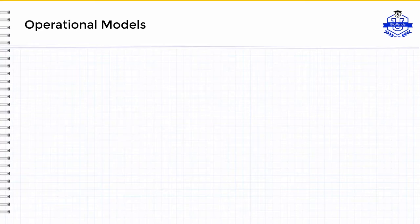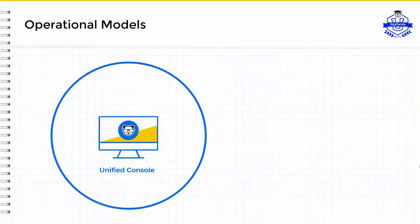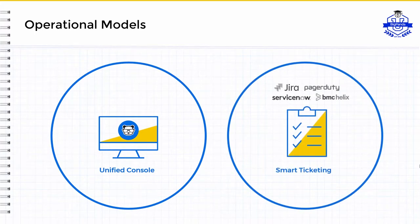BigPanda can be run under three operational models. Unified Console, where all incidents are managed inside the purpose-built BigPanda UI. Smart Ticketing, where BigPanda acts behind the scenes as middleware to enrich and correlate incidents before creating tickets in your ITSM tools, providing the benefit of BigPanda's alert correlation within your existing ticketing workflow.